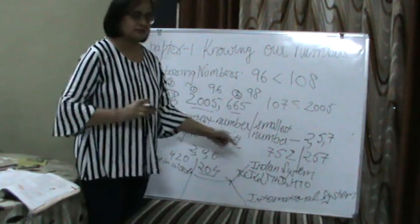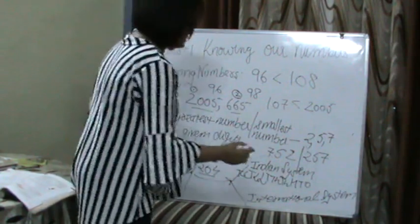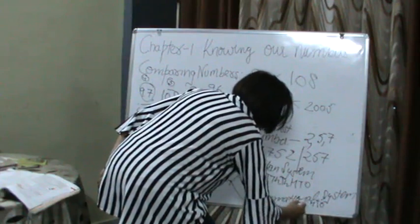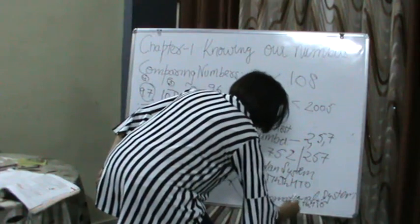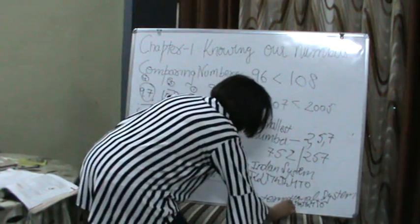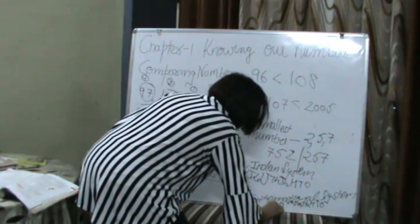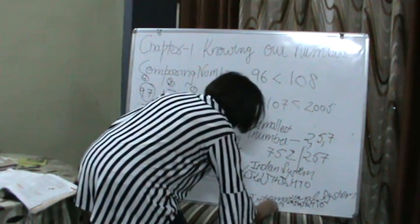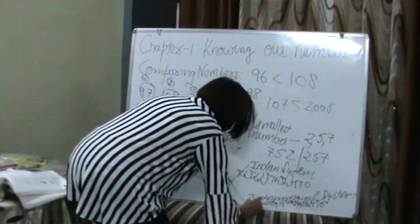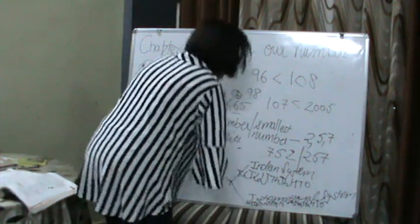Then we come to the International system — we will do a comparative study. In International system, the places are: Ones, Tens, Hundred, Thousand, Ten Thousand, Hundred Thousand, Million, Ten Million, Hundred Million, Billion, and so on. I think the lower part is not clear, so I will write the International system again.